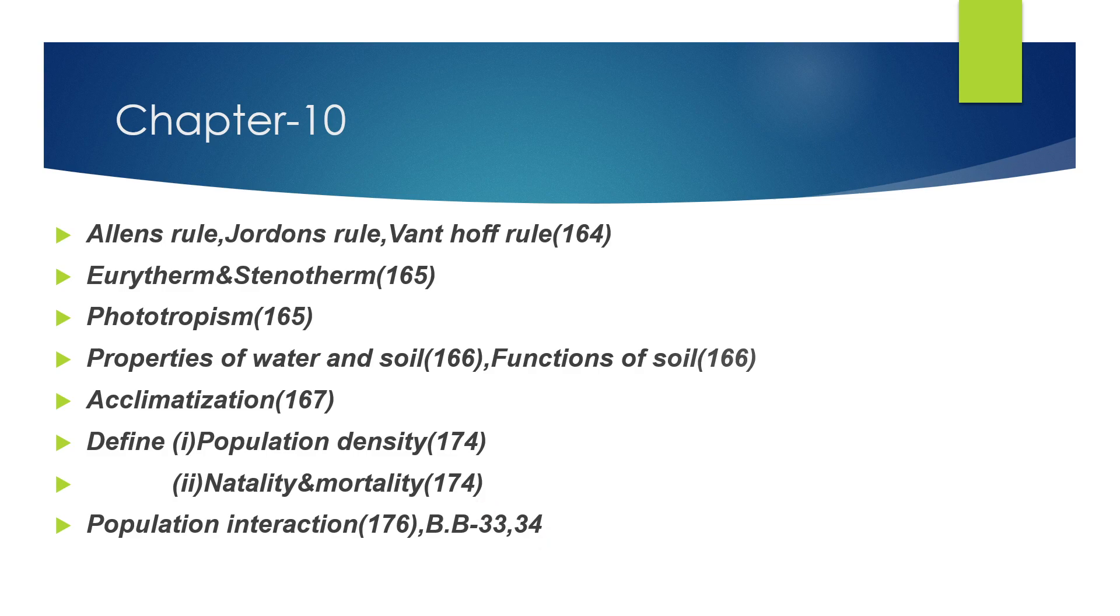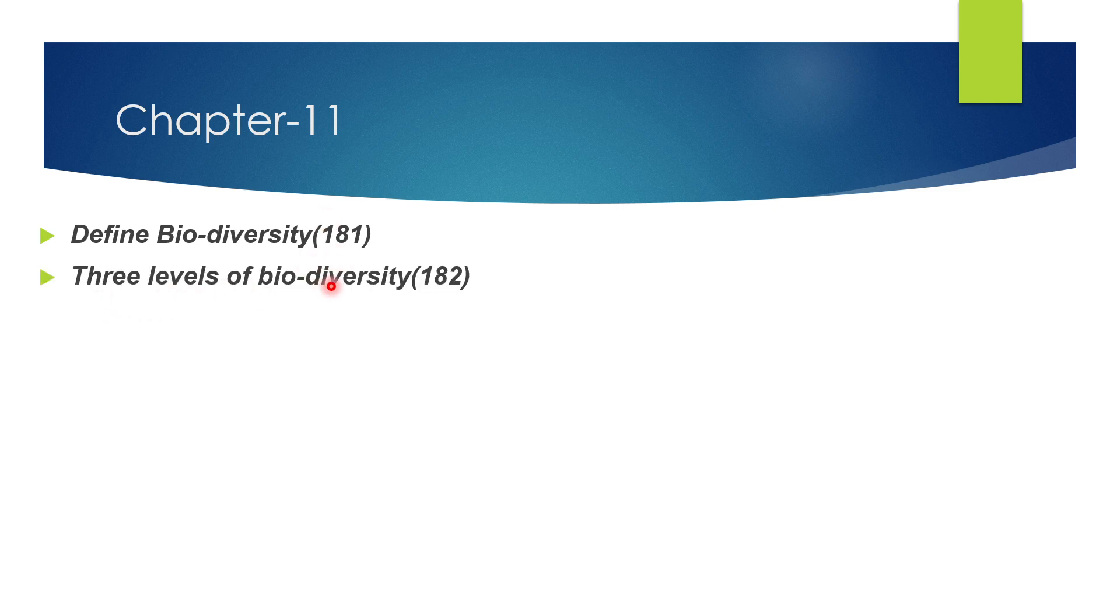Chapter 11: Biodiversity and its Conservation. First question, define biodiversity, page 181. What are the three levels of biodiversity? This question could be two marks. Sometimes they ask 'What is biodiversity, explain' which would be three marks.